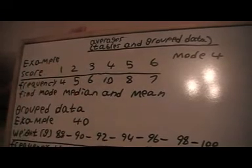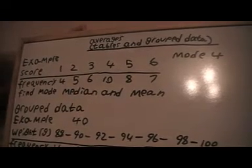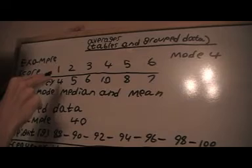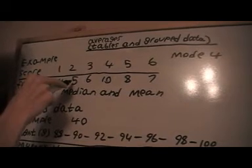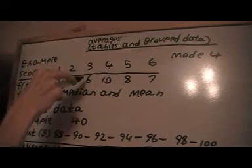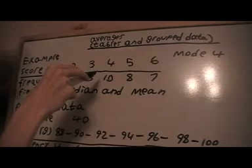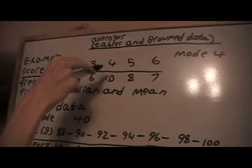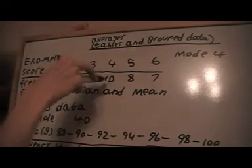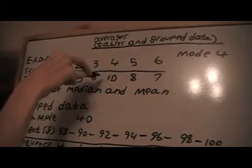...between the 20th and the 21st. So we'll find out where that is. So that's four, that's nine there, that's 15, and this goes to 25. So the 20th and the 21st is going to be in this part of the data, so the median is also going to be four.